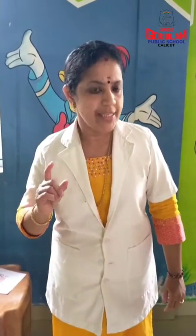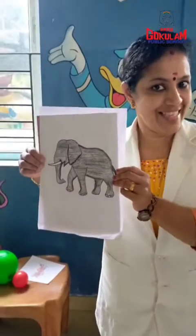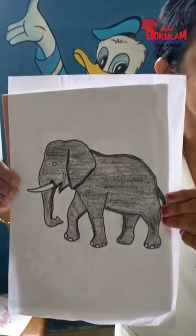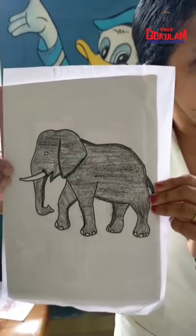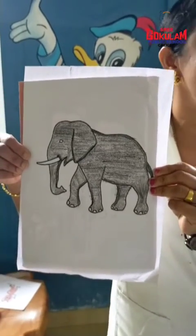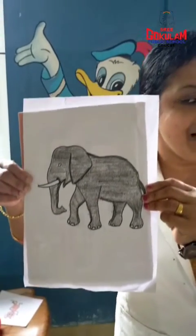Good morning children. Hello. Today someone has come to meet you. Who is that? Who is this? This is your new friend. What is his name? His name is Jumbo Elephant.